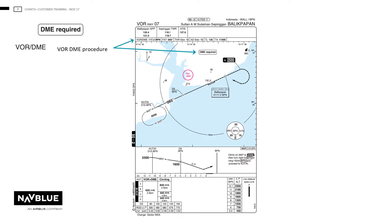The VOR DME procedure: the VOR will be in the title and a note with the words 'DME required' will be inserted. In the main approach shade, it will show the VOR DME procedure with the relevant frequency and IDENT. Magnetic variation will be on all IAC charts, normally in the upper left corner of the chart.